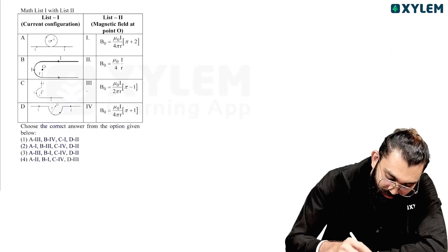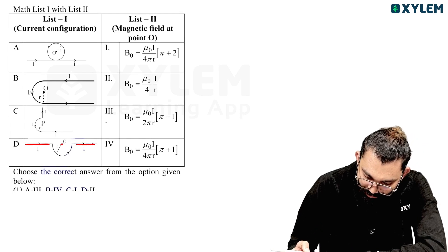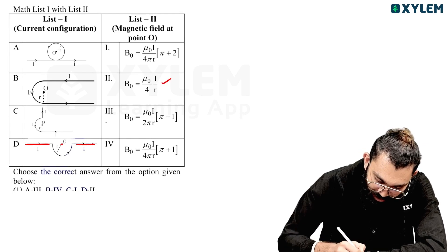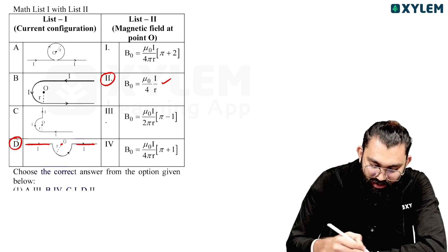This one. Okay, then, the magnetic field—this is the straight segment. The magnetic field at the center is mu_0 i by 4r. Then JEE asks match the following, same concept. Check it out.